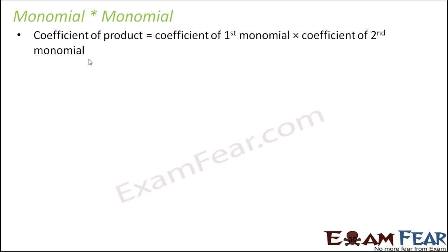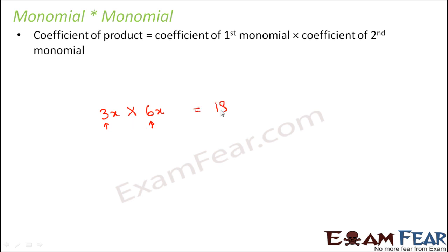How do we multiply a monomial with a monomial? Let's take an example. Let's say there is a monomial 3x and another monomial 6x, and you have to find the product of these two monomials. The coefficient of the product is equal to the coefficient of the first monomial multiplied by the coefficient of the second monomial. Here the coefficient of the first is 3 and the second is 6.